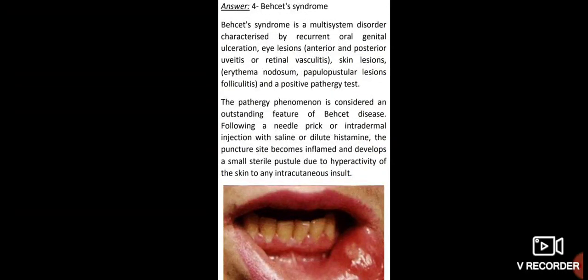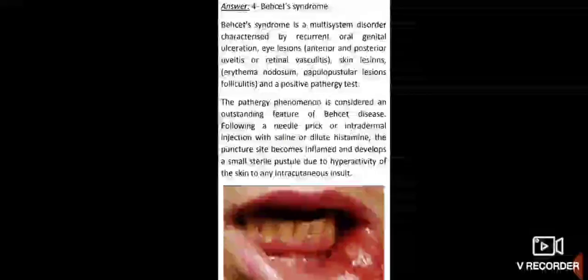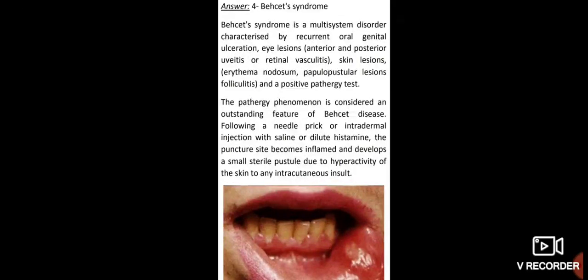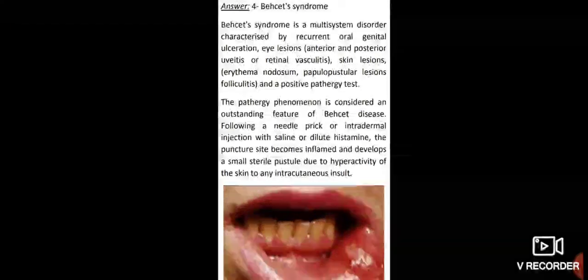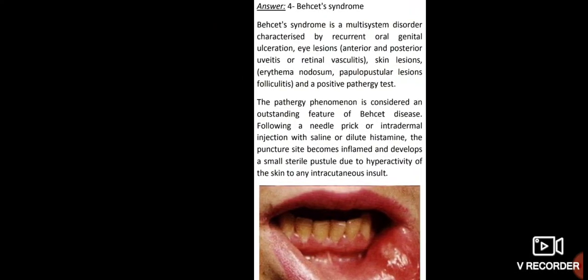Behçet's syndrome is a multi-system disorder characterized by recurrent oral and genital ulceration, eye lesions including anterior and posterior uveitis or retinal vasculitis, skin lesions such as erythema nodosum, papulopustular lesions, folliculitis, and positive pathergy test. Pathergy phenomenon is considered an outstanding feature of Behçet's disease following a needle prick or intradermal injection with saline or dilute histamine — the puncture site becomes inflamed and develops a small sterile pustule due to skin hyperactivity to any intracutaneous insult.